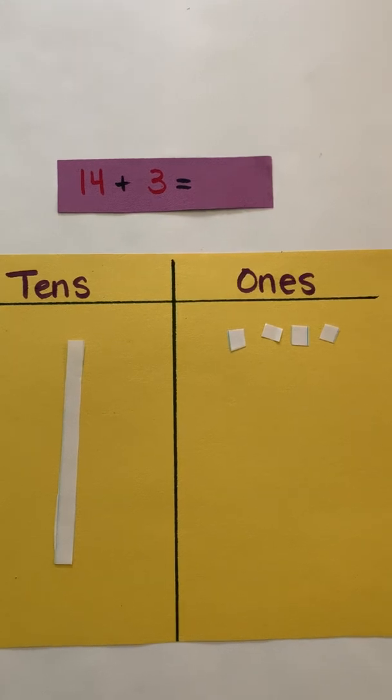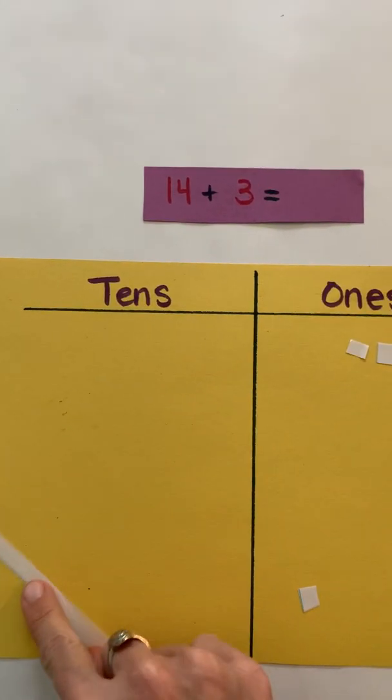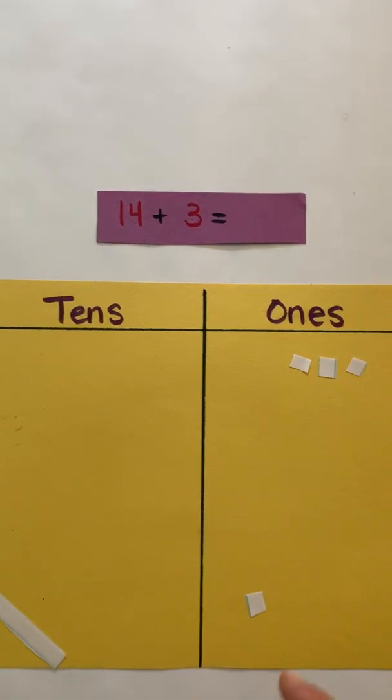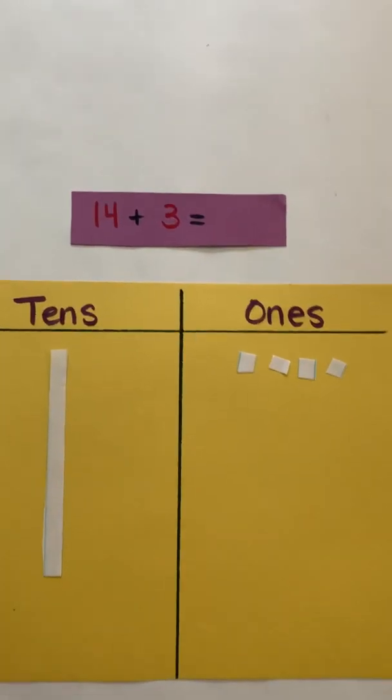To begin I started off with my largest addend. You can definitely start with three if you want, three ones, and then add on 14. But to me I like to start with the largest addend and add from there.